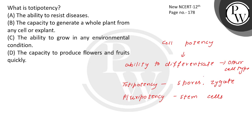Looking at the MCQ options: Totipotent embryonic cells — how is totipotency? Option: the ability to resist diseases. This is incorrect.